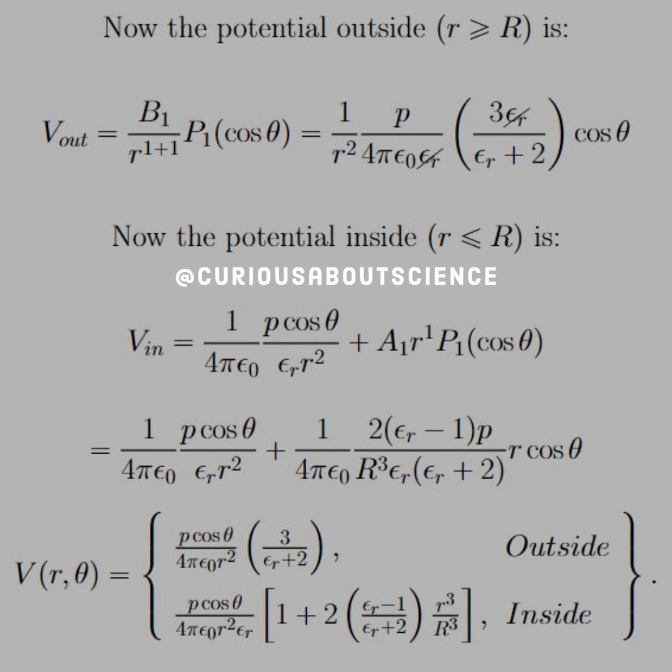Now moving to the potential inside, we have this little mess out front of the A1 coefficient. Due to, again, the situation we have. Plug in A1, and then we factor out a lot of stuff, mainly P cosine over 4 pi epsilon naught, epsilon R.